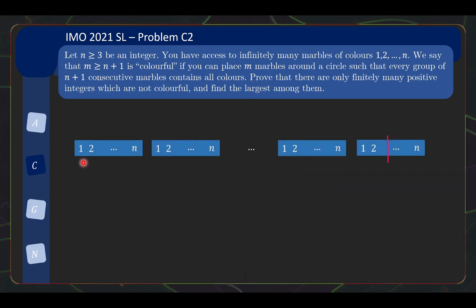So the first construction you might think of is, I just put the colors 1 to n and then I keep cycling through them. So this seems to be a good idea because if you take a look at any stretch of n plus 1 consecutive marbles, indeed you'll definitely cover all the colors. But there's a small problem towards the end. See, the thing is, m might not be a multiple of n. So if you write m as a quotient times n plus a remainder r, then there's some leftovers over here.